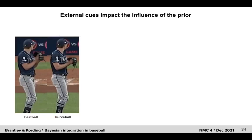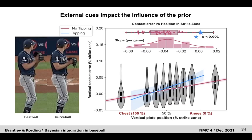Lastly, we consider the scenario of pitch tipping, in which external cues impact the behavior of the batters. The idea of tipping is that pitchers unintentionally display information to batters about what type of pitch is coming. For the specific incident shown here, when the glove was set high the oncoming pitch was a fastball, and when the glove was low the pitch was a curveball. These cues are subtle yet easily recognized by professional batters. Indeed, we found that for all at-bats during this game where tipping occurred, batters relied significantly more on the prior than during all other games for this pitcher.